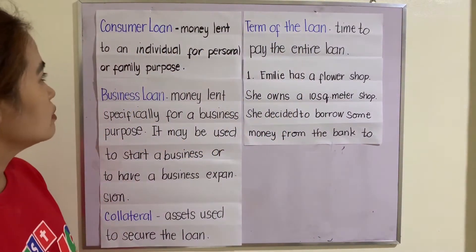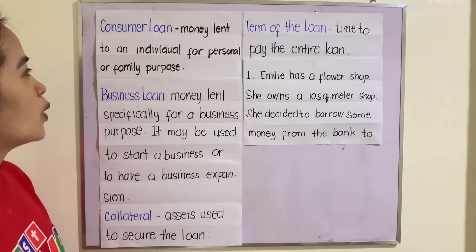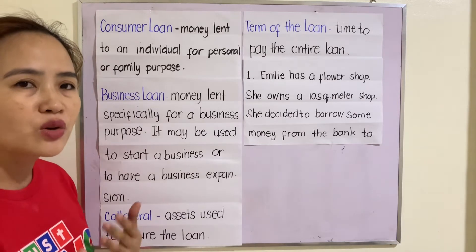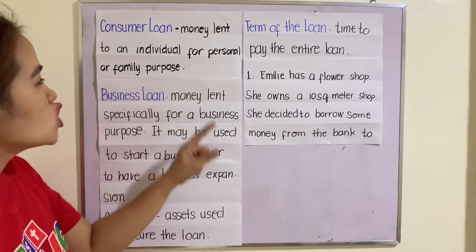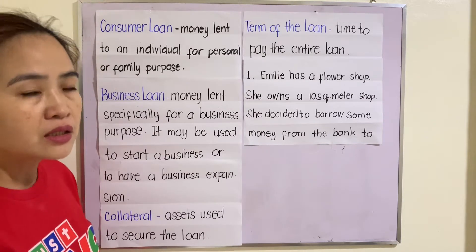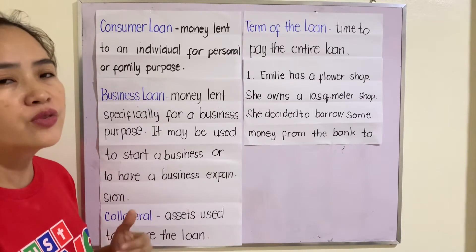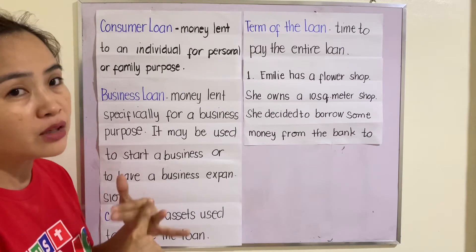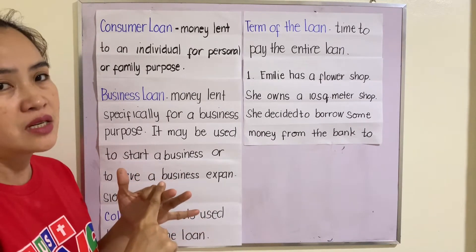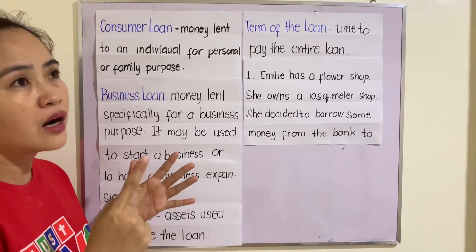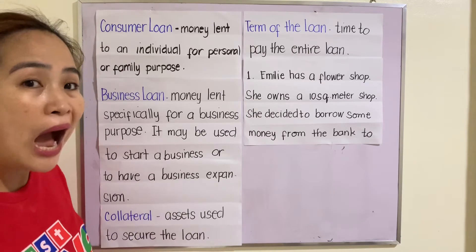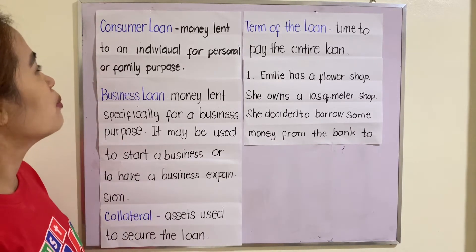Consumer loan: money lent to an individual for personal or family purpose. Take note that when we say consumer loan, this is for personal or family purpose — like the education of your children, buying furniture, buying appliances, expanding or renovating your house. Those are examples of consumer loan.